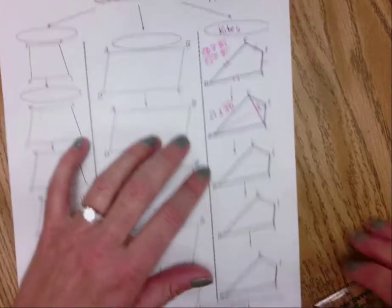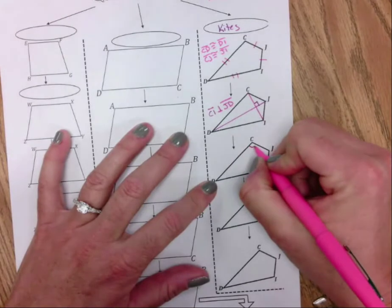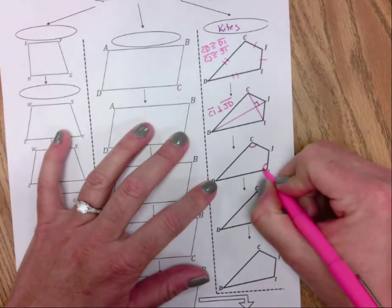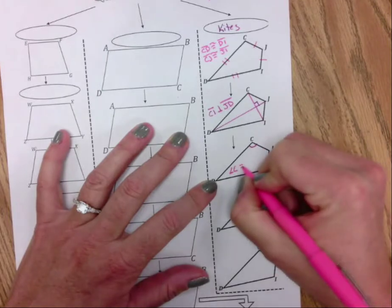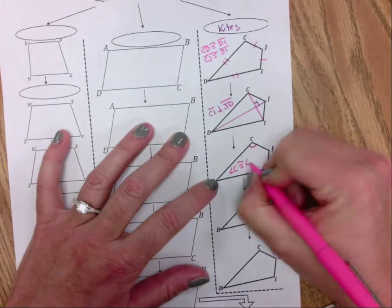Another thing it has, one pair of opposite angles are congruent. So angle C is congruent to angle I.